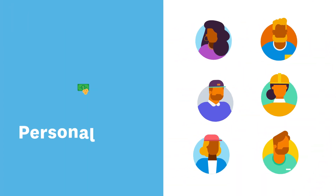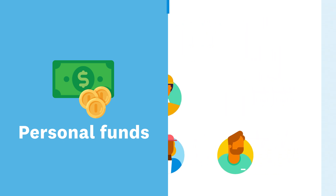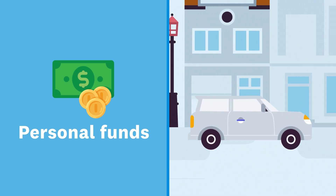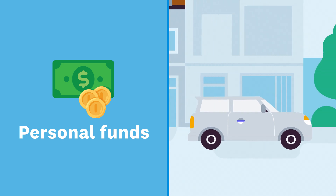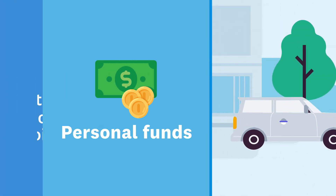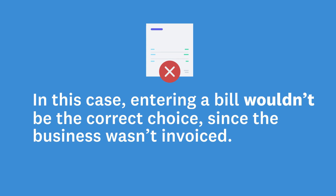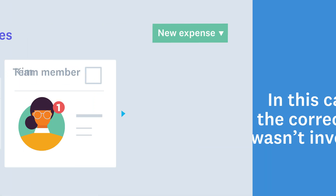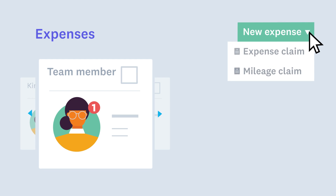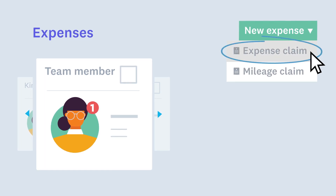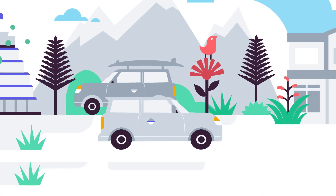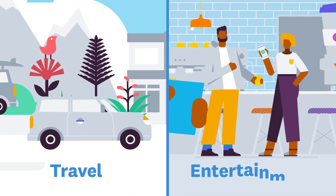There might come a time when you or your team have used personal funds to pay for business expenses, such as travel to a customer meeting. These need to be reimbursed by the business to make sure everything is recorded correctly. In this case, entering a bill would not be the correct choice, since the business wasn't invoiced. Whoever incurred the costs needs to create an expense claim to request a reimbursement. This includes the detail of the costs incurred and how it relates to the business, for example, travel or entertainment.